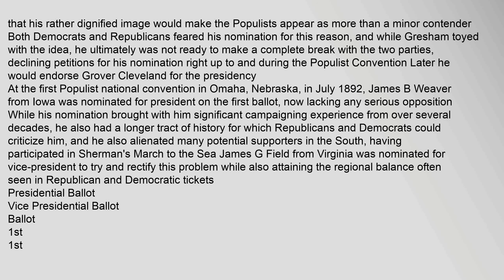At the first Populist national convention in Omaha, Nebraska, in July 1892, James B. Weaver from Iowa was nominated for president on the first ballot. While his nomination brought significant campaigning experience from over several decades, he also had a longer track record for which Republicans and Democrats could criticize him, and he alienated many potential supporters in the South, having participated in Sherman's March. James G. Field from Virginia was nominated for vice president to try to rectify this problem and attain regional balance.